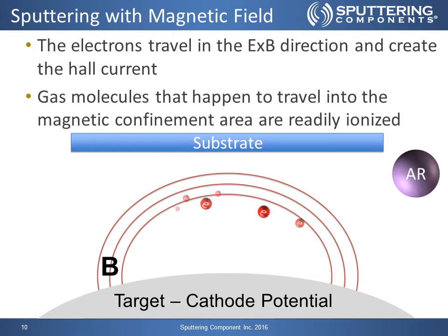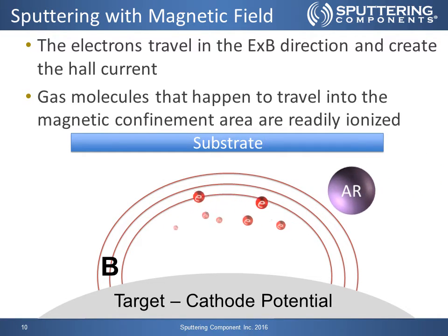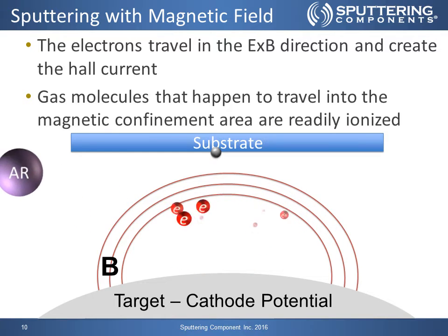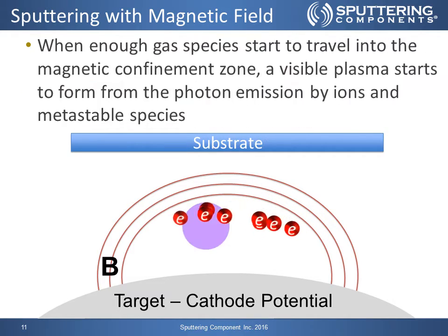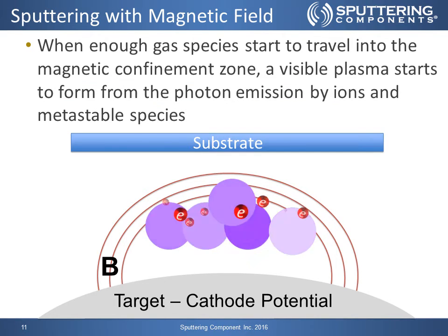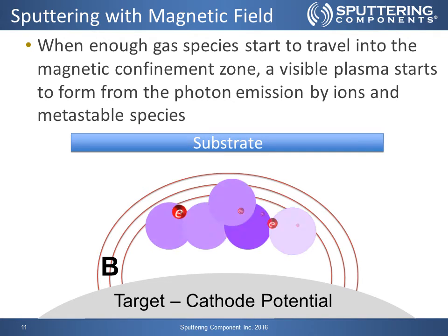If we have our argon neutral on the right-hand side entering into our confinement zone, it would then turn into an argon ion, hit the target surface, turn back into a neutral, and travel out. Once it hits the target surface, it also sputters material which lands on our substrate. When many gas species travel into the magnetic confinement zone, a visible plasma starts to form from the photon emission of those ions and metastable species during the process of ionization.